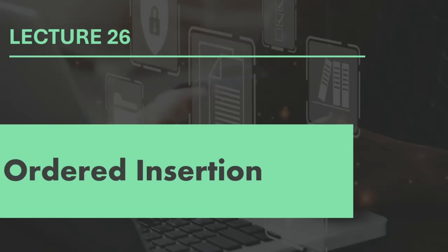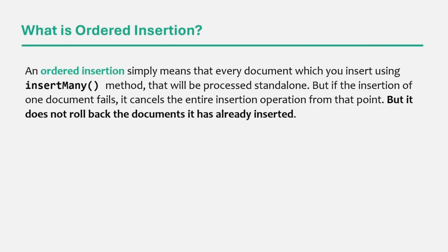Now let's try to understand what ordered insertion in MongoDB is with an example. Ordered insertion simply means that every document inserted using the insertMany method is processed standalone. But if the insertion of one document fails, it cancels the entire insertion operation from that point — it does not roll back documents already inserted. Ordered insertion is applicable only to insertMany, not insertOne, since insertOne inserts a single document.